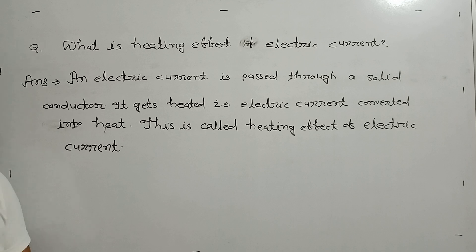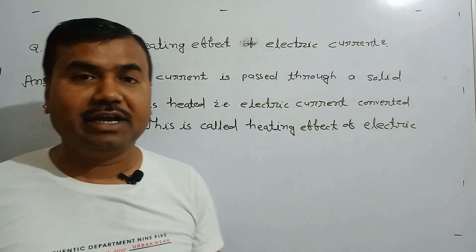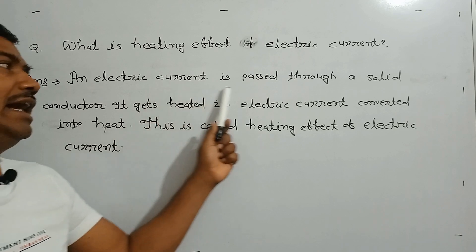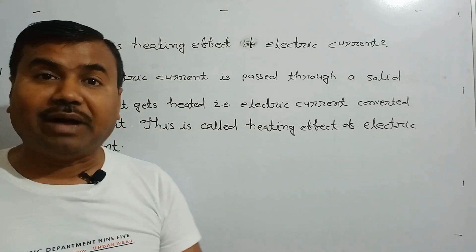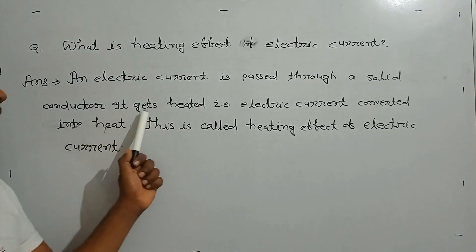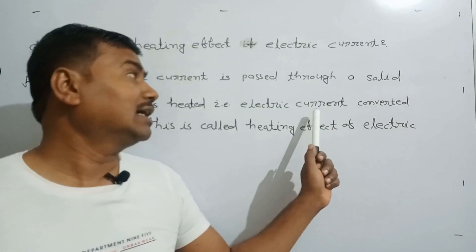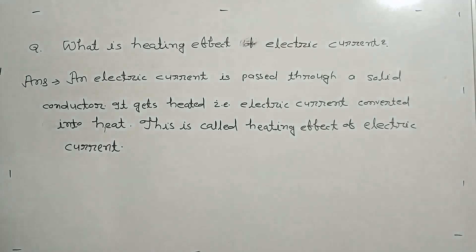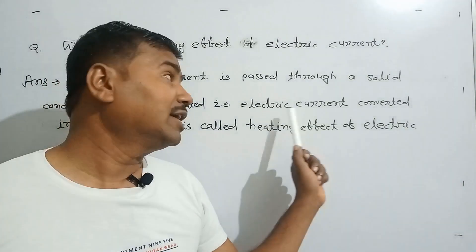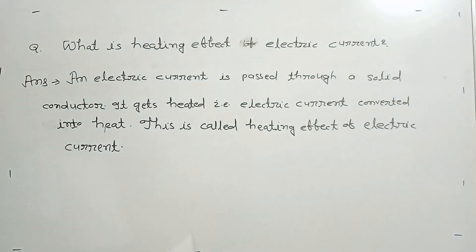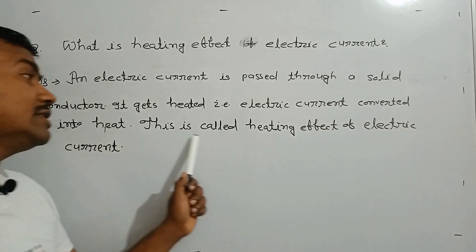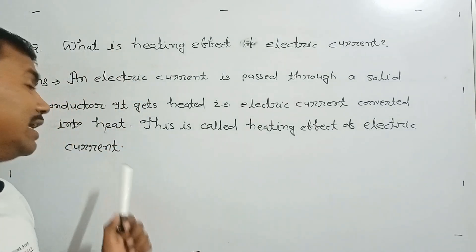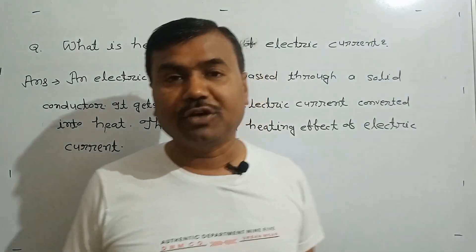The definition of heating effect of electric current is: when an electric current is passed through a solid conductor, the conductor itself gets heated. That is, electric current, or electric energy, is converted into heat. This is called the heating effect of electric current. Thank you so much.